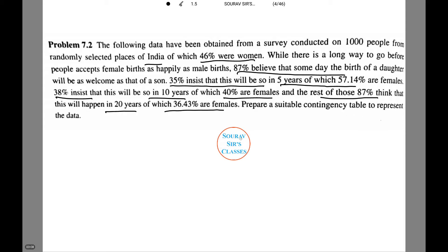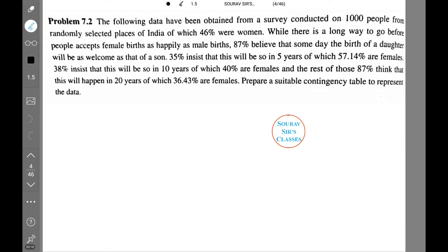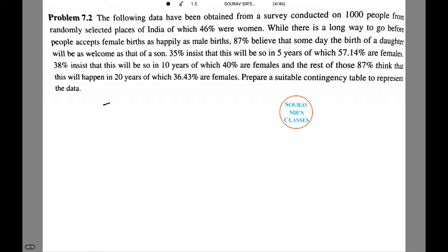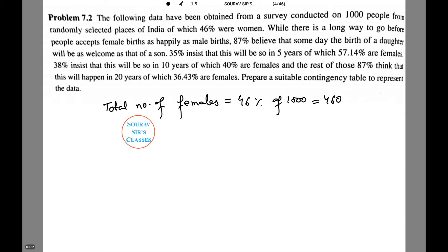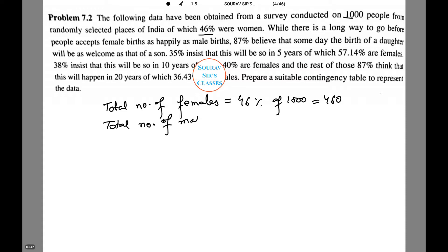Let's see how the table will look like. Before moving on to the table, we first need to do the calculations. Total number of females equals 46% of 1000, which equals 460. Similarly, total number of males equals 540, that is 1000 minus 460.